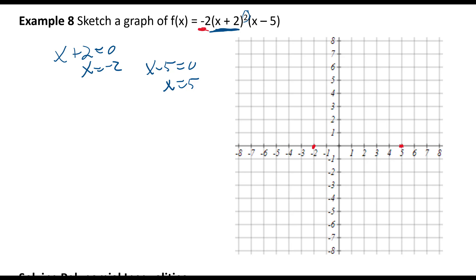Now we have this -2 out front. Normally this is a cubic, so think of this x, this x², times an x is x³. So normally it'd be going up here, going down here, but because of the -2, what's going to happen instead is it's going to be going up this way and down this way.